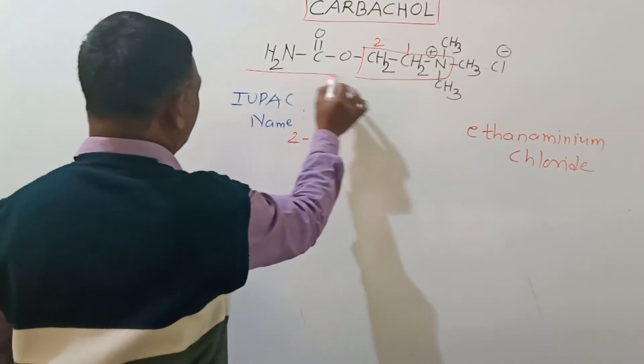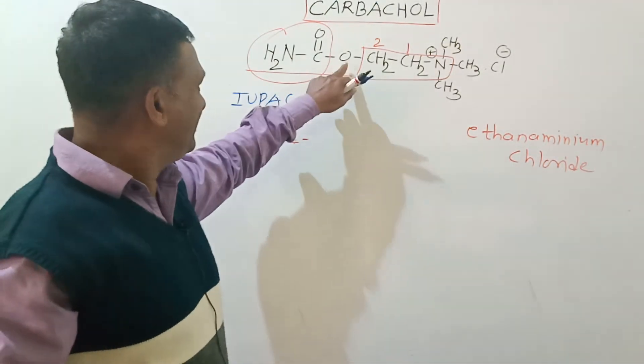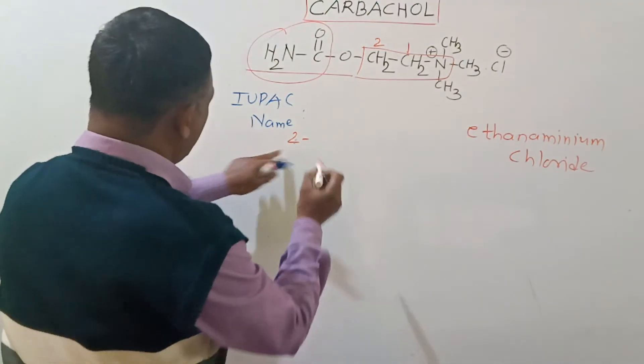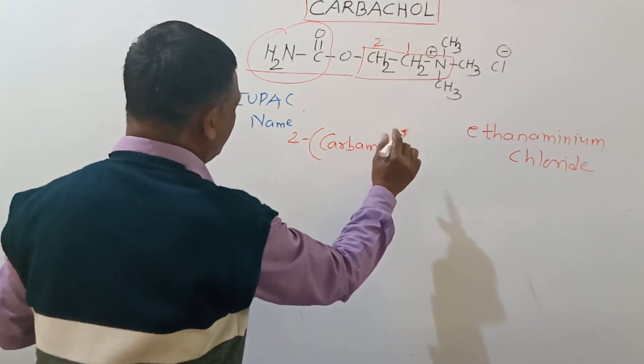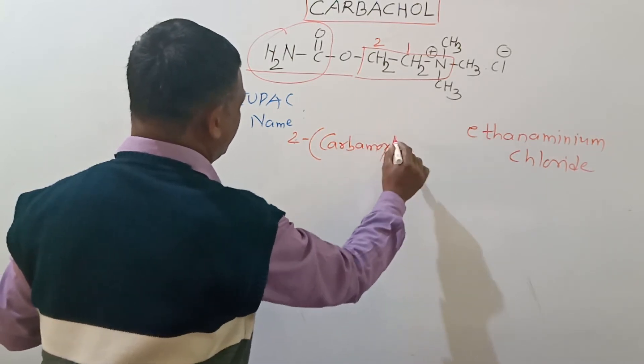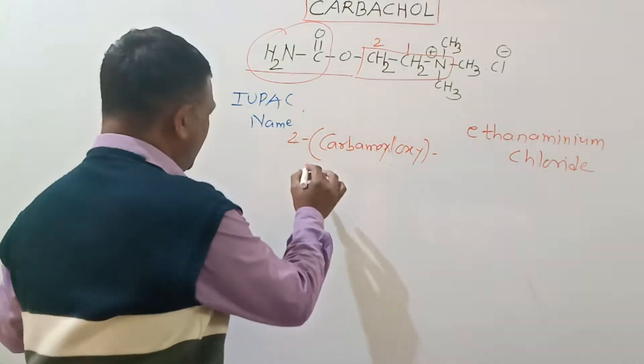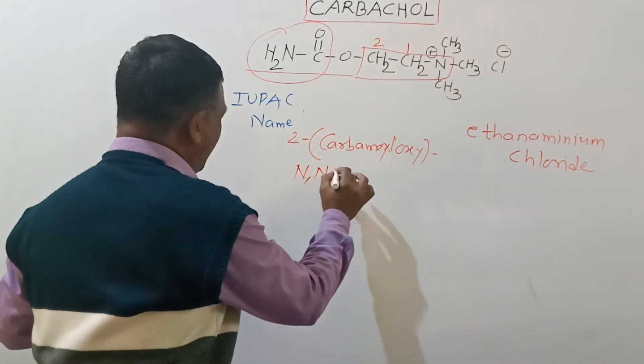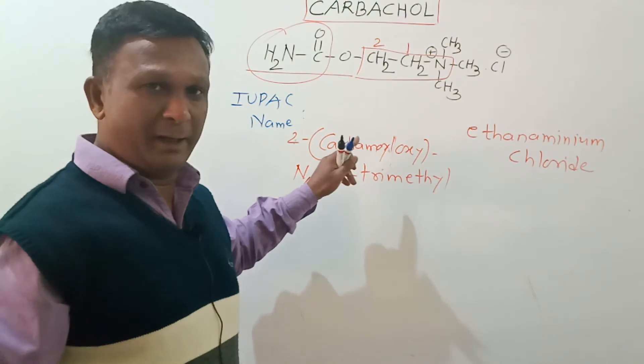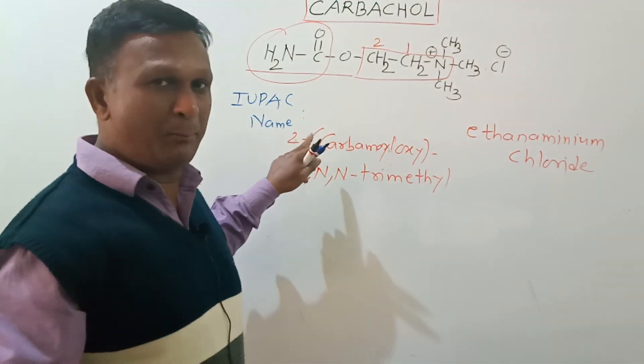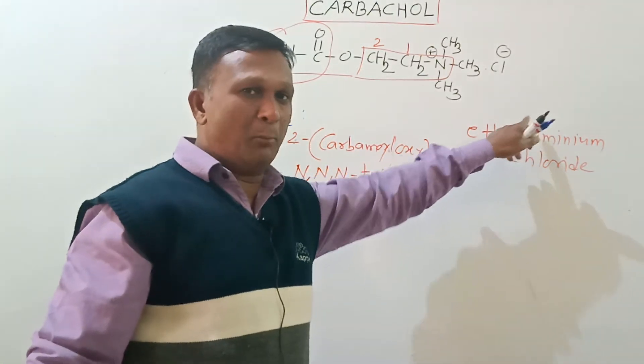On the carbon number two we have this group, out of which this is called carbamoyl and this is oxy, so we can say that on second carbon we have carbamoyloxy group. On the nitrogen we have three methyl groups, so they can be written as N,N,N-trimethyl. So the systematic name of Carbachol will be 2-carbamoyloxy-N,N,N-trimethyl ethane aminium chloride.